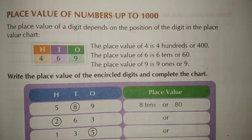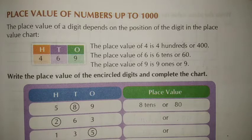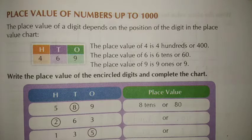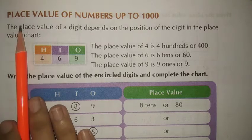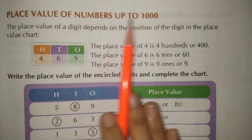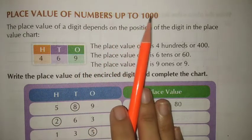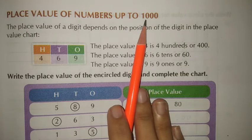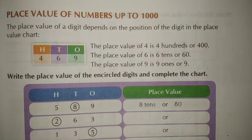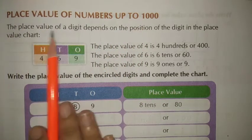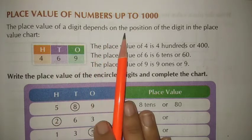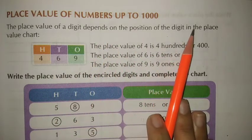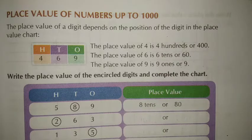My dear students, today's subject is mathematics and today we will learn chapter number 3: 3-digit numbers. In this study we will see place value of numbers up to 1000. The place value of a digit depends on the position of the digit in the place value chart.